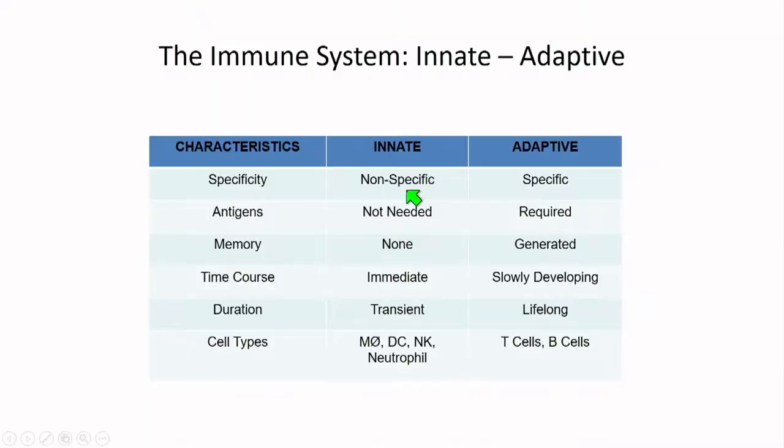When we talk about the immune system, there are two basic concepts: the innate immune system and the adaptive immune system. The innate system is nonspecific — it doesn't need antigen presentation, has no memory, acts immediately, and is transient. The cell types are macrophages, dendritic cells, natural killer cells, and neutrophils.